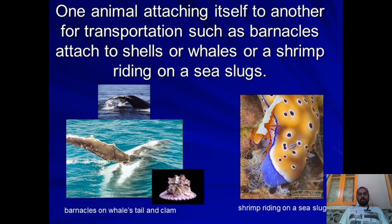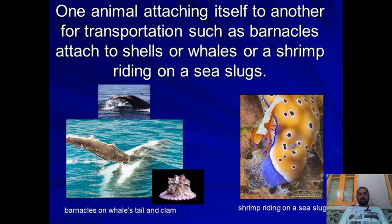One more example is attaching itself to another animal for transportation. Larger animals such as whales have barnacles and clams on their tails, and these organisms get a free ride. You can also see a shrimp riding on sea slugs. Similarly, hermit crabs walk around and many sea animals attached to their shells get to move around as well.